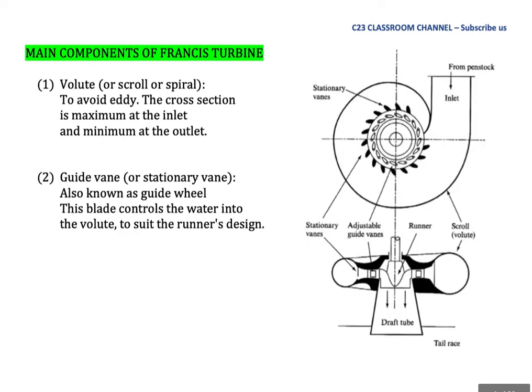This is the main component of Francis Turbine. Number one: Volute, also called scroll or spiral. It is located here. The volute in Francis Turbine is similar to the volute in a centrifugal pump. It was created to avoid eddy. The cross-sectional area is maximum at the inlet and minimum at the outlet.